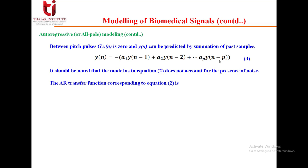The AR transfer function corresponding to this equation can be written as H(z) = g / [1 + ∑(k=1 to p) a_k · z^(-k)], where g corresponds to the x(z) term in the numerator and the denominator contains the poles. We have converted the equation into the z-domain and taken the ratio Y(z)/X(z), which is H(z).